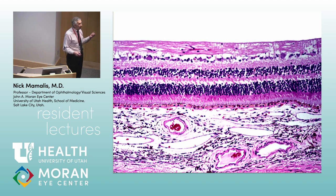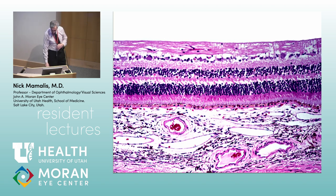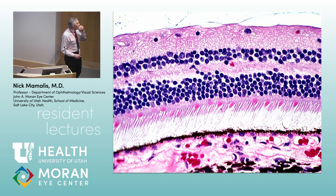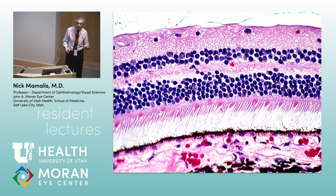You can talk about retinal layers anatomically, but also how a photon of light comes through and is processed. Looking at a close-up of the retina, let's trace a photon of light. A photon has to come through the retina — to me the retina is kind of designed upside down. If I were designing it, I'd have the photoreceptors out where the light comes through.